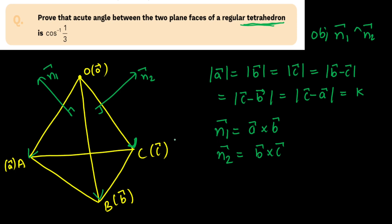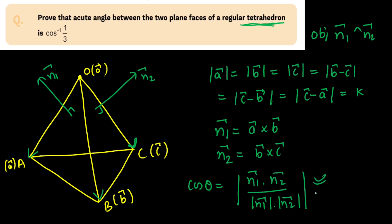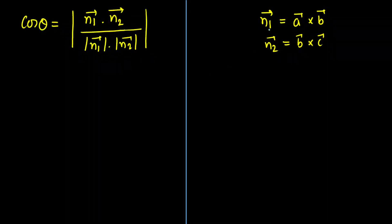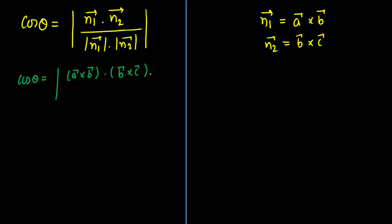In order to find the angle between these two, I am going to use the dot product: cos theta equals mod of N1 dot N2 divided by mod of N1 times mod of N2, since we are finding the acute angle. Substituting, cos theta equals mod of (A cross B) dot (B cross C) divided by mod of (A cross B) times mod of (B cross C). In the denominator, mod of A cross B equals mod A times mod B times sin 60 = K squared times root 3 over 2. Similarly, mod of B cross C = K squared times root 3 over 2. So the denominator is K raised to 4 multiplied by 3 by 4.